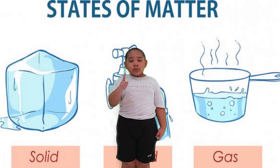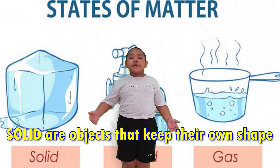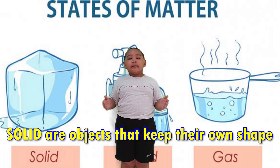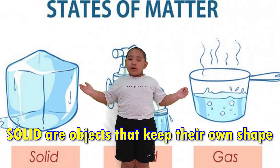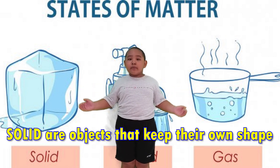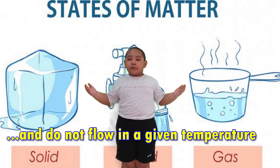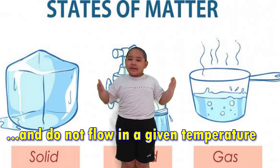Today I want to explain about liquid, solid and gas. Number one, solids are objects that keep their own shape and do not flow at a given temperature.